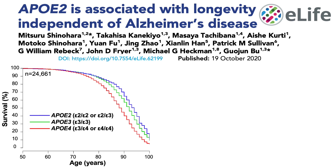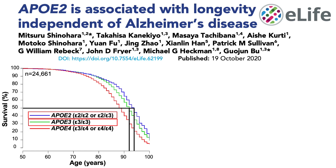We're looking at survival on the y-axis plotted against age, and this is data in humans. Carriers of ApoE2 — defined as having two E2 alleles or one E2 and one E3 allele — are shown in blue. ApoE3, defined as having two E3 alleles, is shown in green. ApoE4, in red, is defined as having one E3 and one E4 allele or two E4 alleles. Average lifespan was longest for the ApoE2 carriers in blue at about 95 years, shorter for ApoE3 carriers in green at about 91 or 92 years.